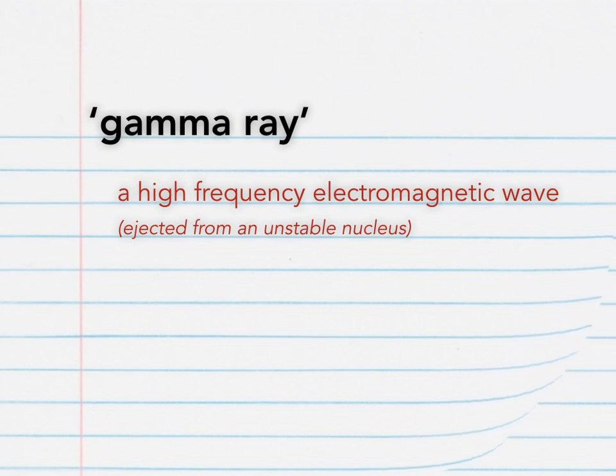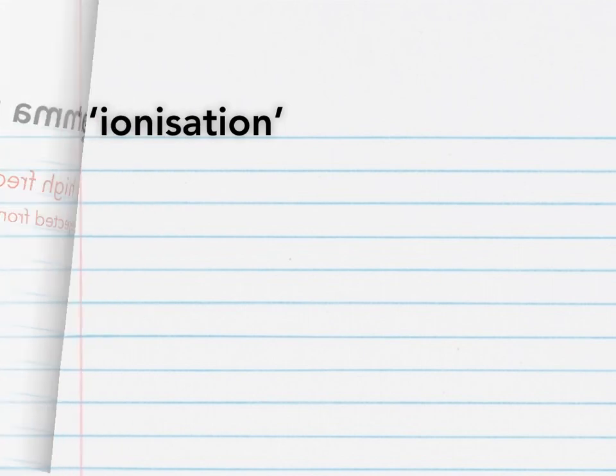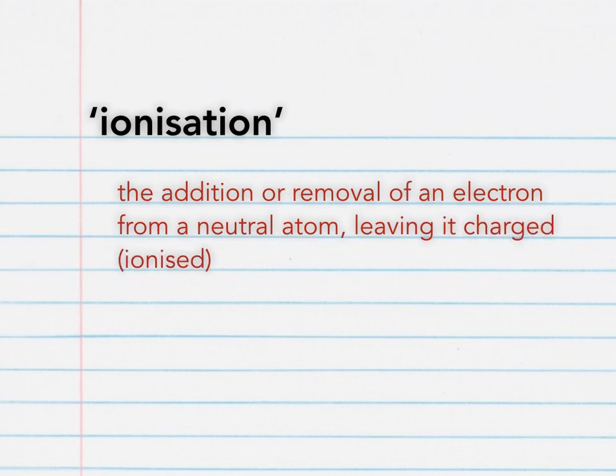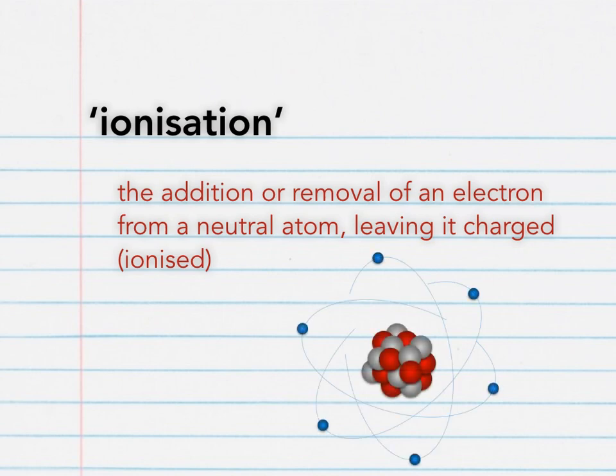Talking about ionisation, that's our next definition. Ionisation is the addition or removal of an electron from a neutral atom, leaving it charged or ionised. The next animation shows how a positively charged alpha particle can remove an electron from a neutral atom. In this case, the atom would then be positively charged.